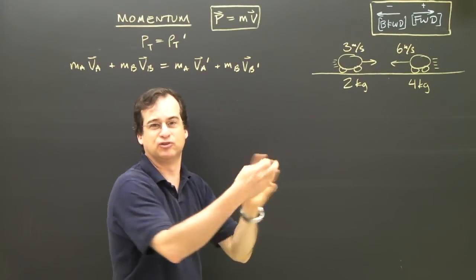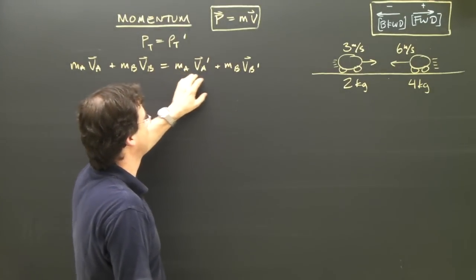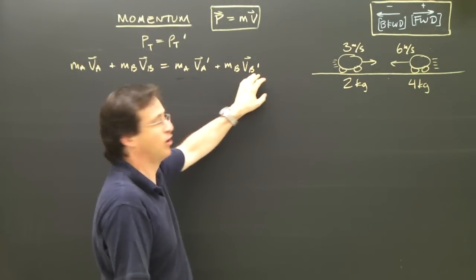Afterwards, they're going to bounce off or join or something. I have to account for the car A and car B.